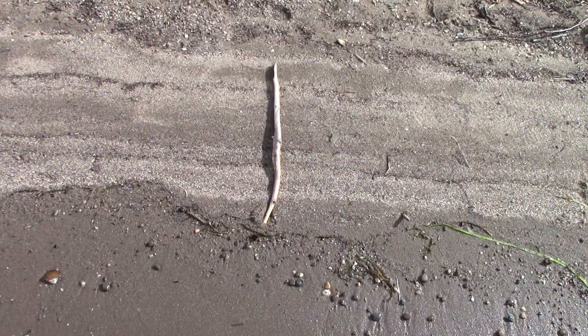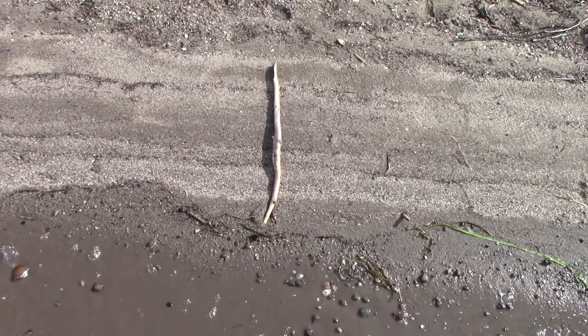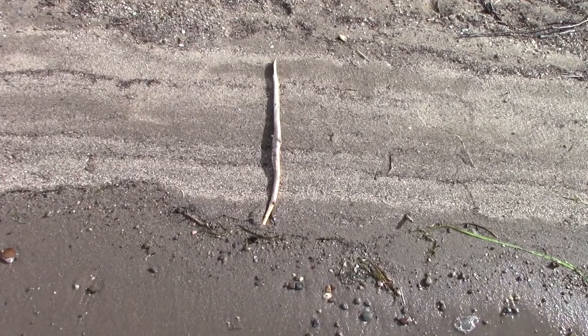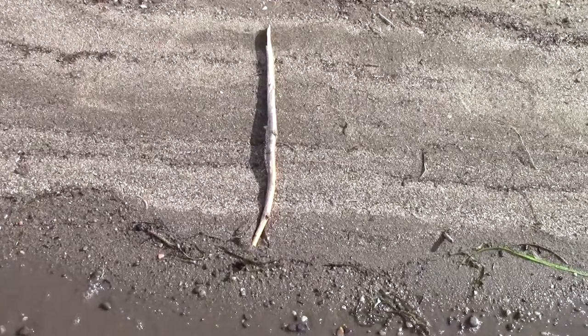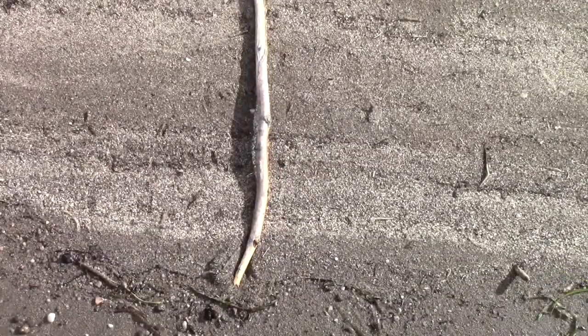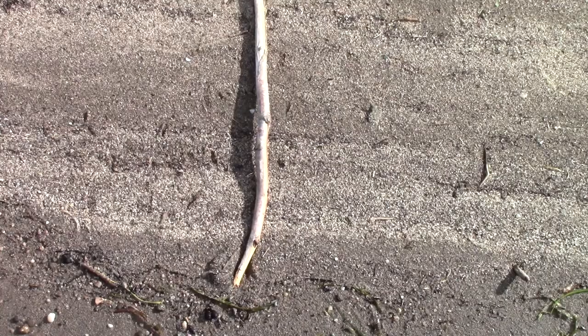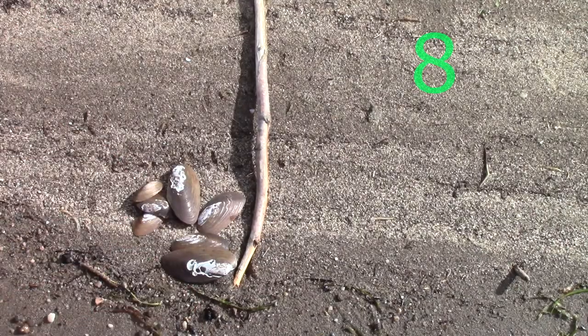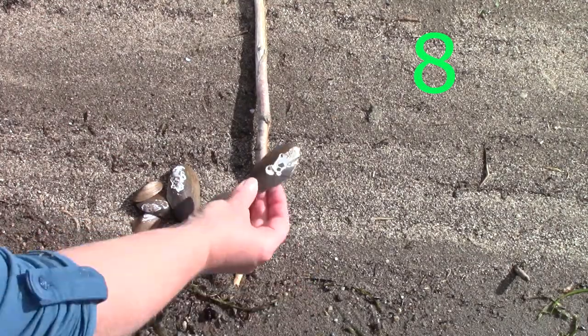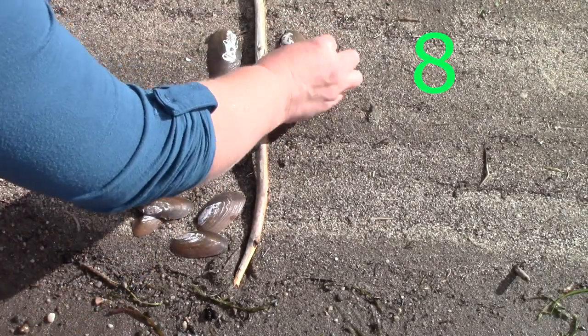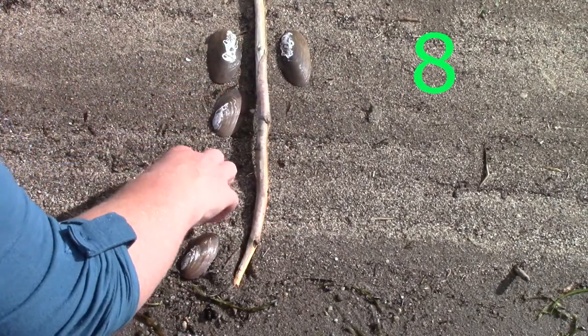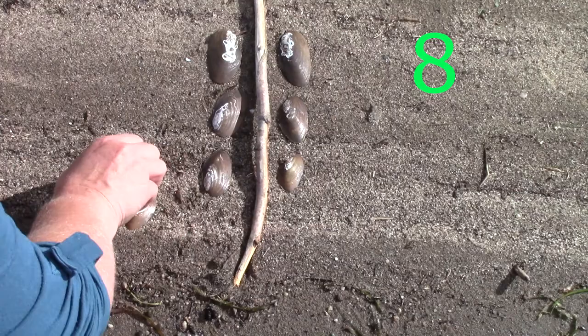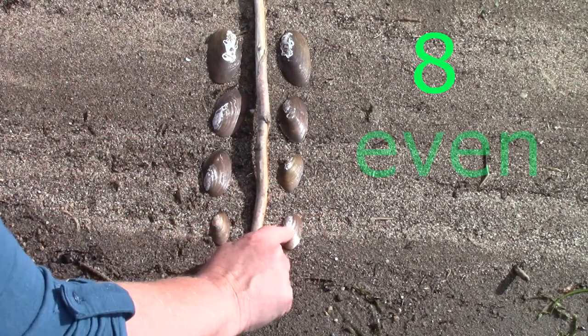All right class I am right down by the water. Do you see the waves coming up on the shore? Well I thought that it would be fun to count and look at some fun beach items. I have some shells here today. And I have eight shells. And we're going to figure out if eight is even or odd. Let's count them. One, two, three, four, five, six, seven, eight.